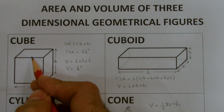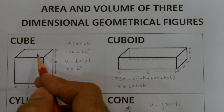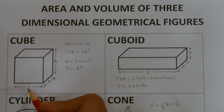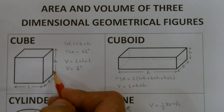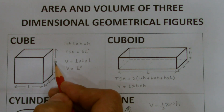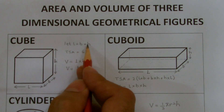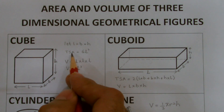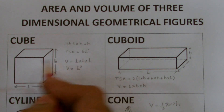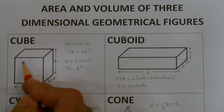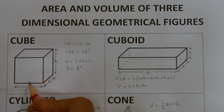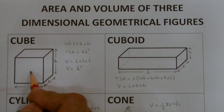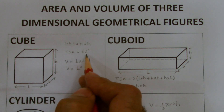A cube is a six identical face geometrical figure where all the dimensions are equal. If I consider one dimension as length, one as breadth, and the vertical one as height, then being identical I can take L, B, and H as the same. To calculate the total surface area, I find the area of one face by multiplying length and width, which gives L squared. Since it has six faces, I multiply L squared by six to get total surface area = 6L².